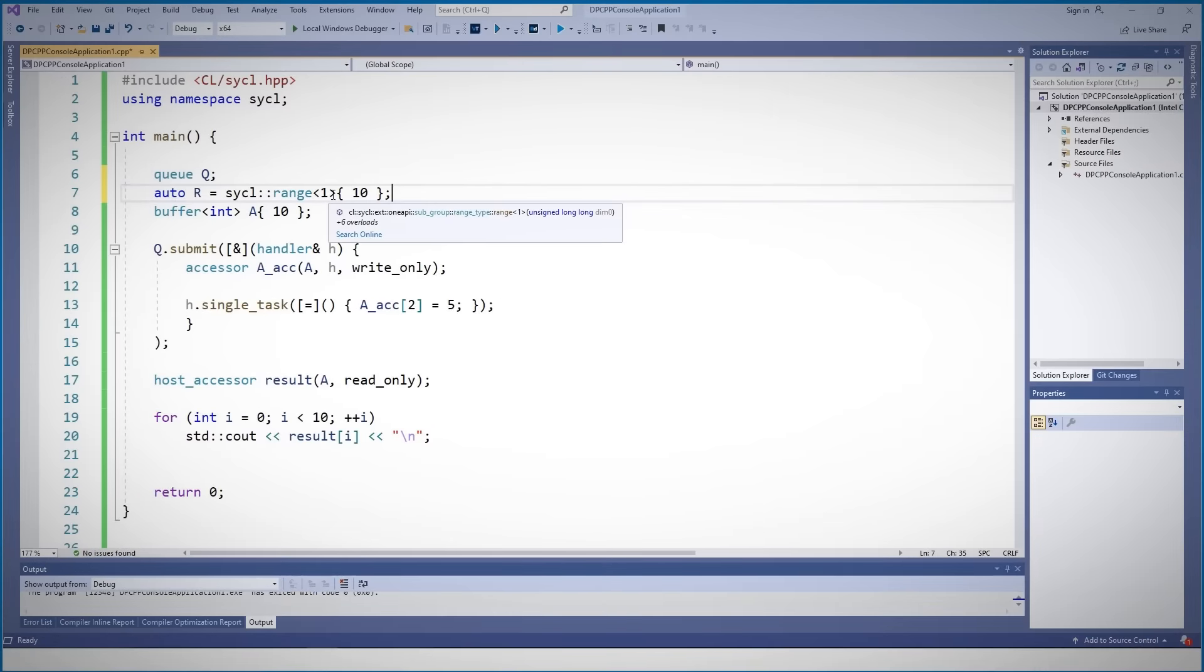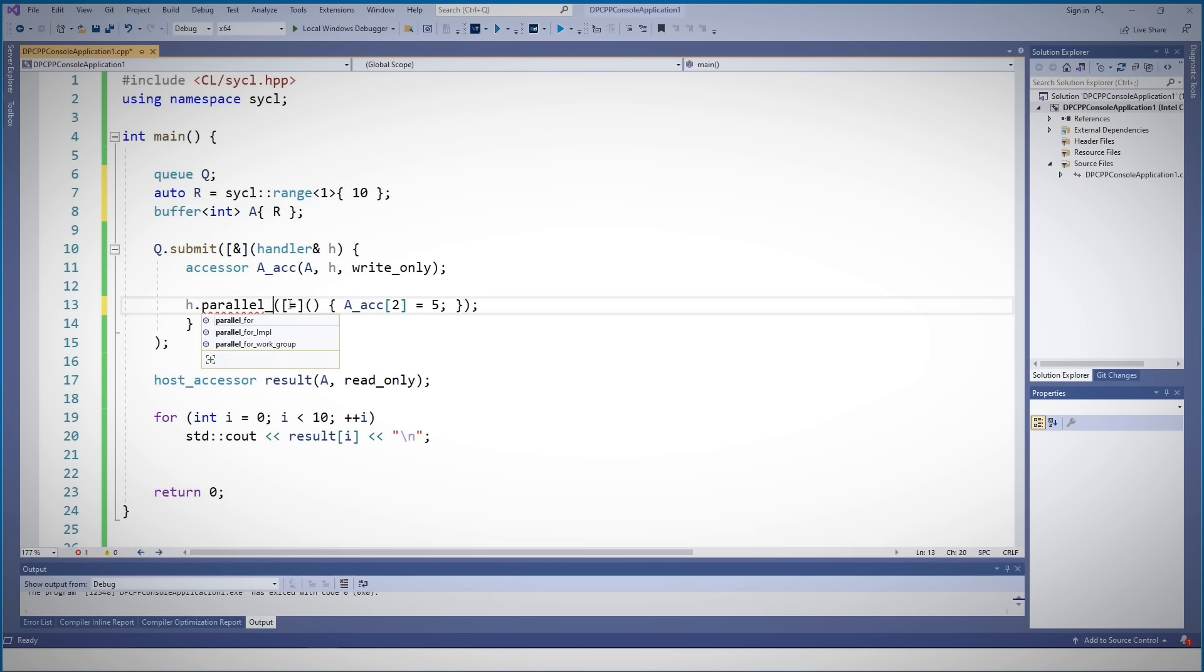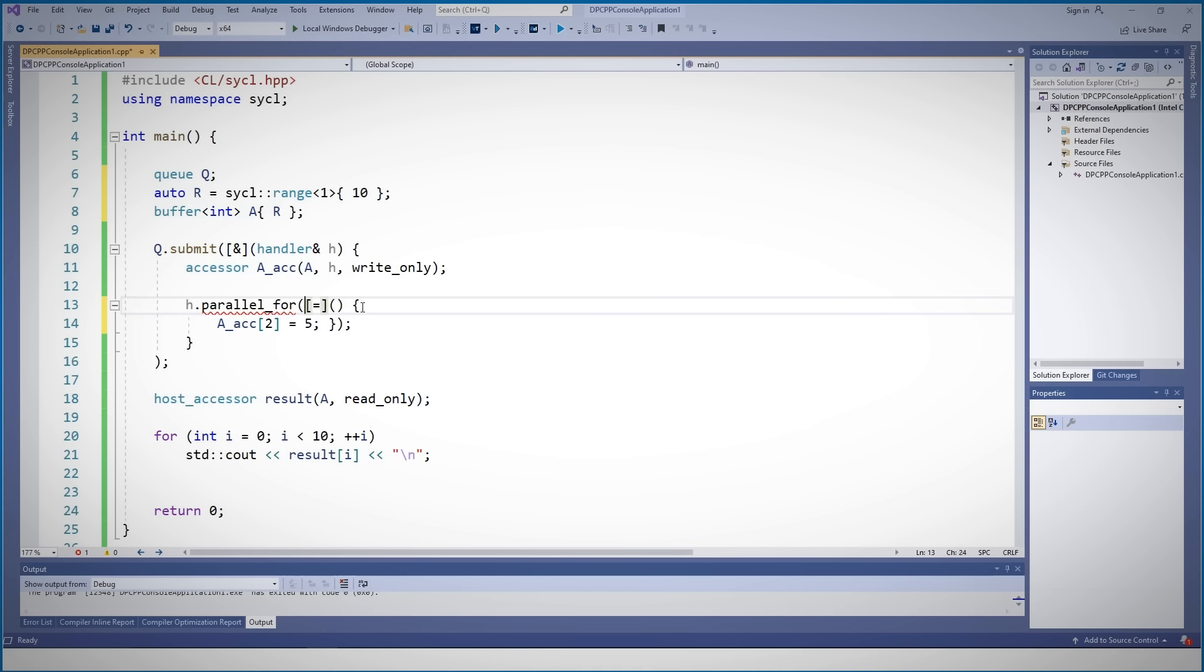Let's define a range. A is still a buffer of range, meaning of 10 integers. An accessor is still accessing A. But instead of a single task where only a single execution is done on the device, we will run parallel for, so every iteration of this lambda function could be run in parallel. We need to specify the range and we also need the index of the item.